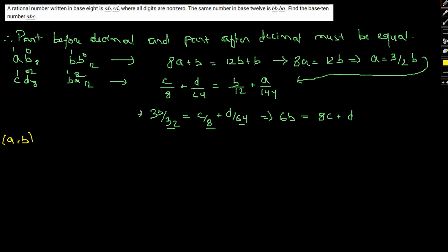a comma b will lie between 1 to 7 since it's a base 8. So there are 1 to 7 digits, so they will lie between 1 to 7. They must be single non-zero digits as such. So now again we have a equal to 3 by 2 b, so basically...